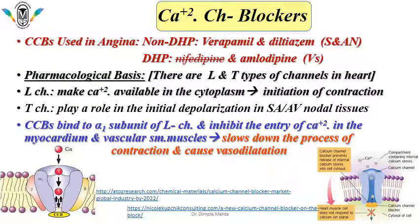The next important group after beta blockers is calcium channel blockers. Calcium channel blockers used in angina are verapamil and diltiazem from the non-DHP group. Verapamil and diltiazem are more specific for channels present at the SA node and AV node. DHP derivatives — nifedipine and amlodipine — are more vasoselective agents that cause vasodilatation. Their activity is more preferred for calcium channels present in vascular endothelium. For angina, non-DHP derivatives are more preferred.